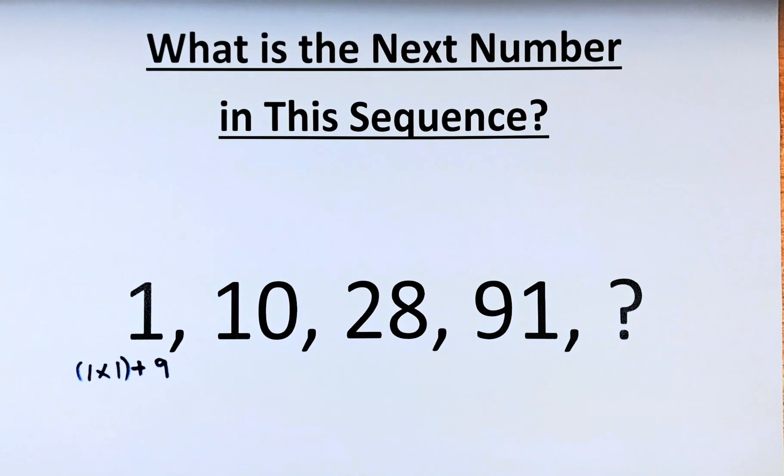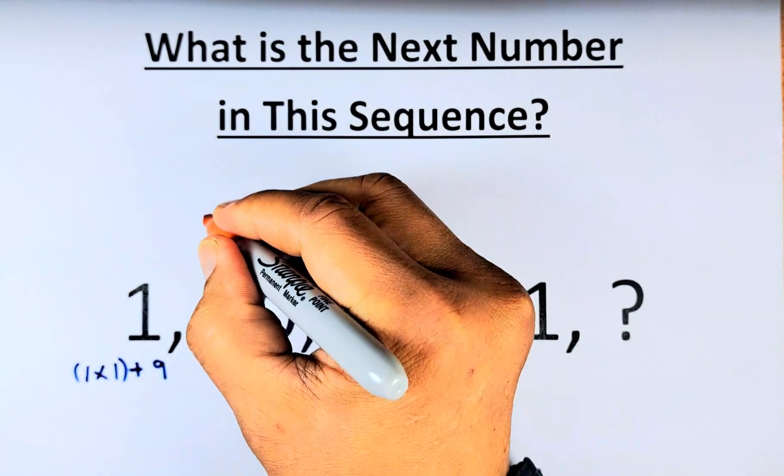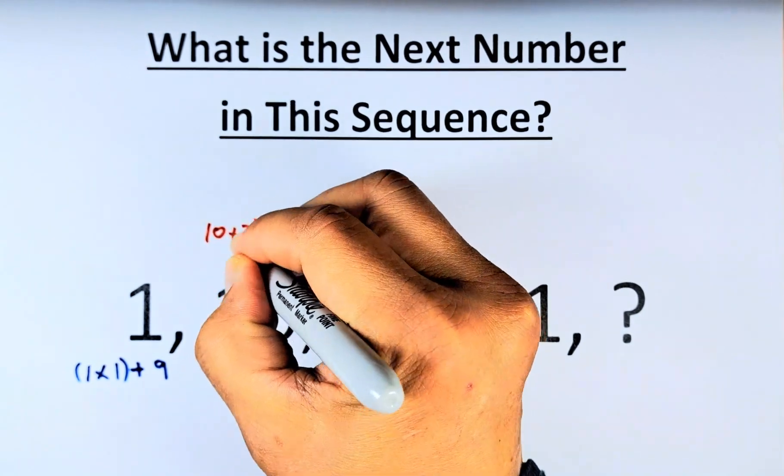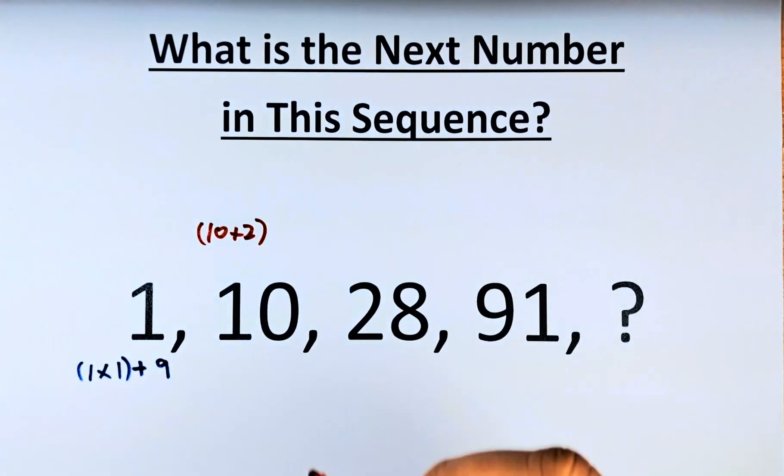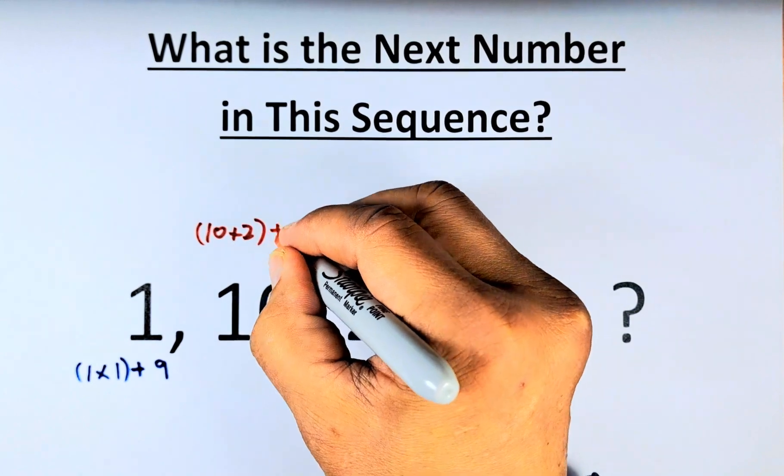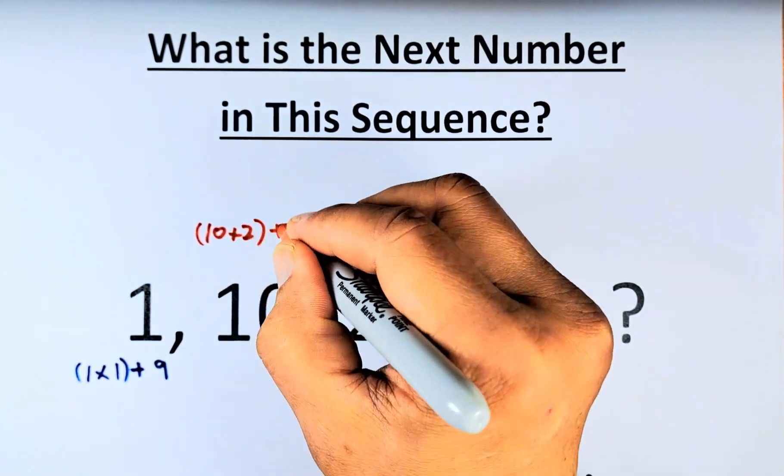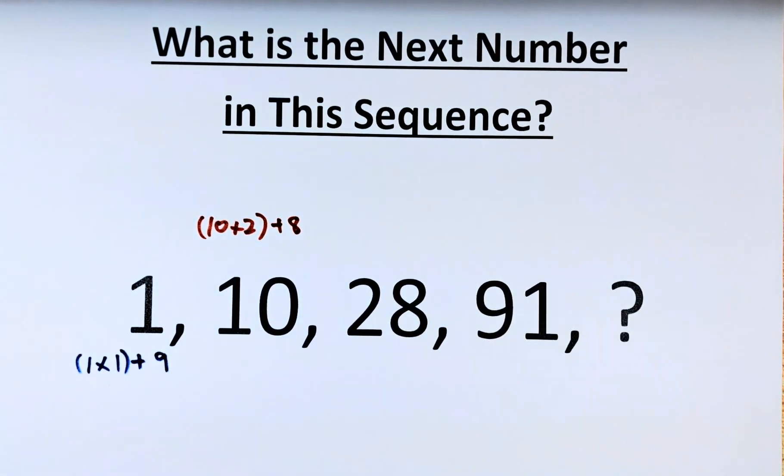Now, from 10 to 28, we do the same thing. So instead of multiplying by 1, we're going to multiply the next number, 10, by 2. That will give us 20, and to get 28, we just add 8. So 10 times 2 is 20 plus 8, that will give us the next number, which is 28.